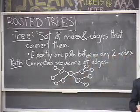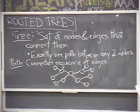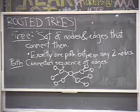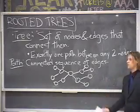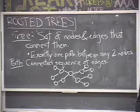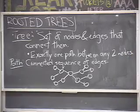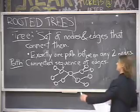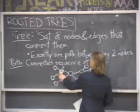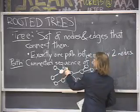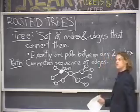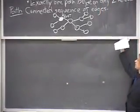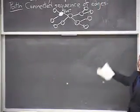Now if you've seen trees before, probably you haven't seen this sort of general kind of tree, but rather you've seen rooted trees. You can convert a general tree into a rooted tree just by choosing any one node — some special designated node — and calling that the root. Then customarily, we redraw the tree so that the root is at the top, and then we have a rooted tree.